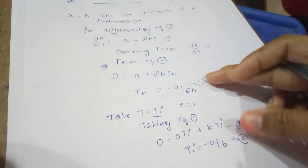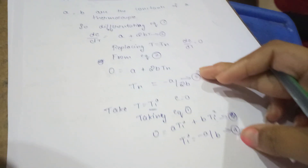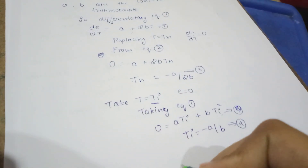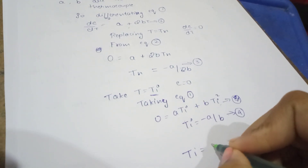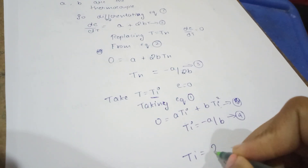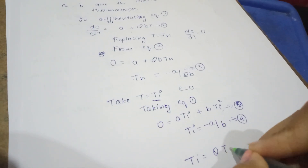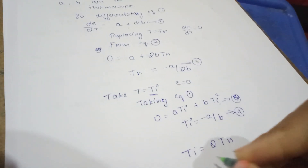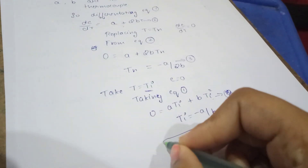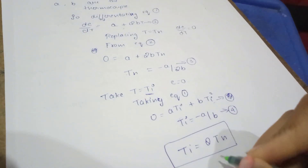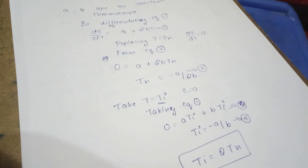From equations three and four we get T-i = 2 × T-N. That is the derivation — if you write it, you will get full marks.